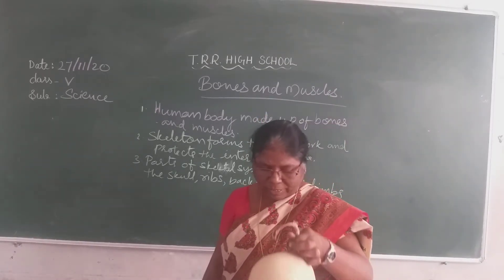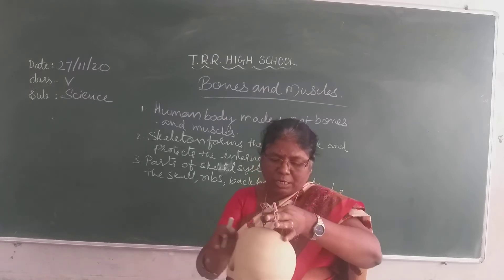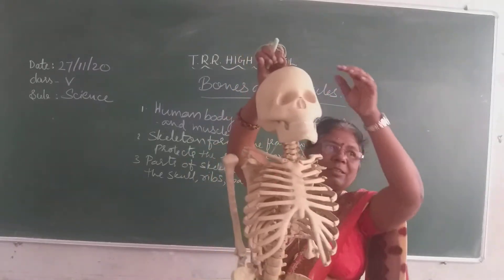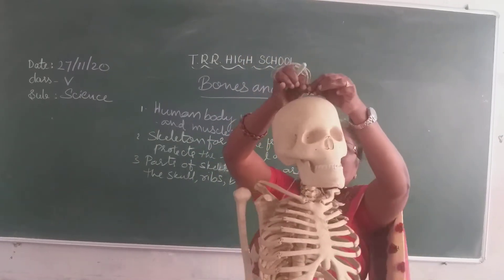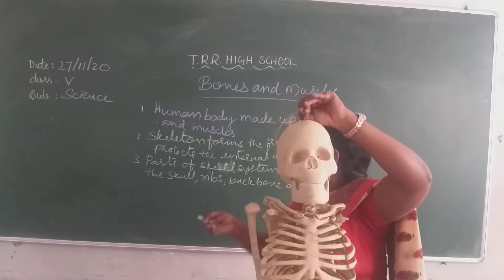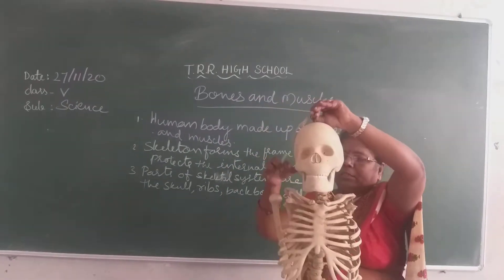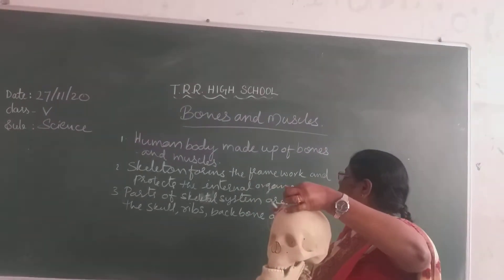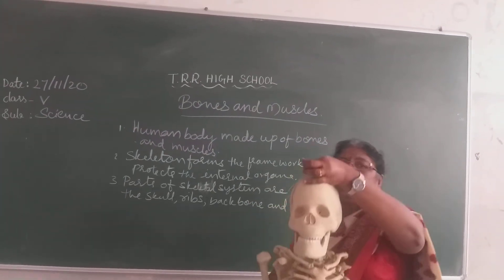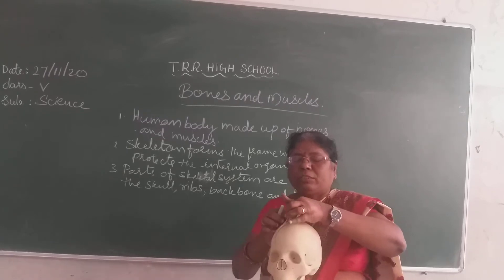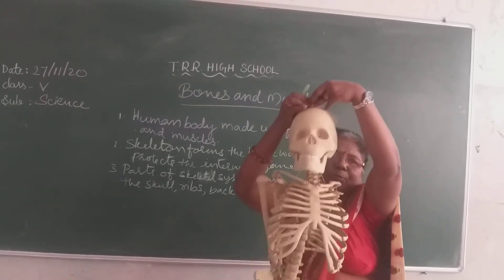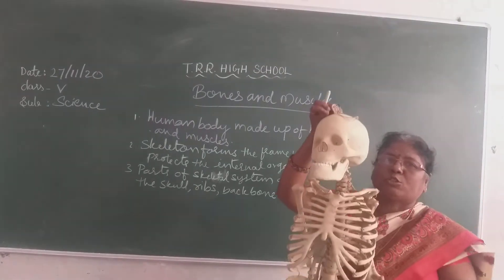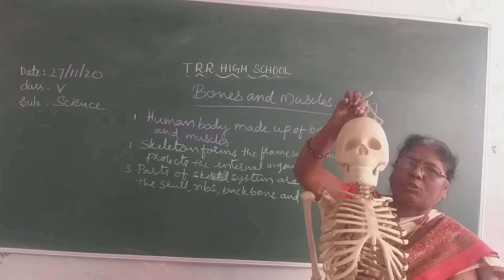What we have discussed — here I will show you the skeletal system. This is a human skeletal system. You are seeing a body made up of bones and muscles; here you are seeing only bones. The skeleton forms the framework and protects the internal organs. It gives strength and shape to our body. These are the functions — it protects the soft internal organs of our body.